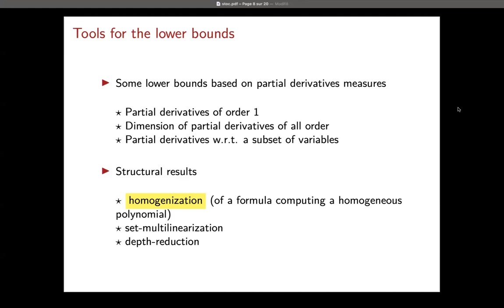If we have a polynomial with a high measure — usually in some class like VNP — we get a lower bound. The second set of tools is structural results. For example, depth reduction: we know that for arithmetic circuits, we can always parallelize to polylogarithmic depth. Another structural result, the one we are interested in today, is homogenization — how much does it cost to homogenize a formula?